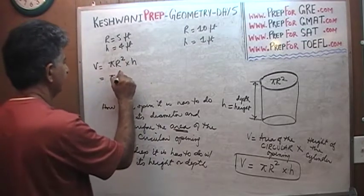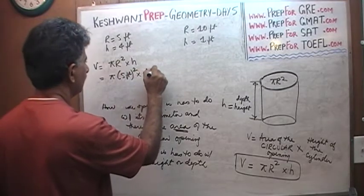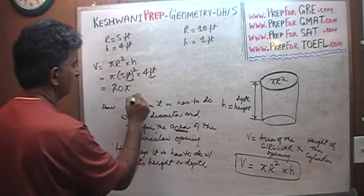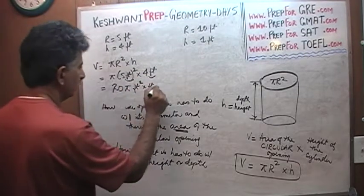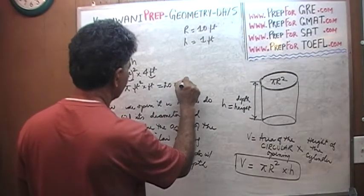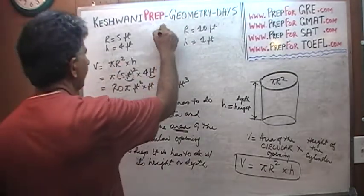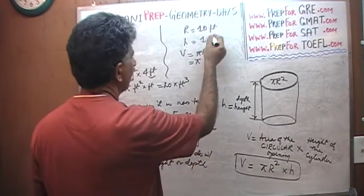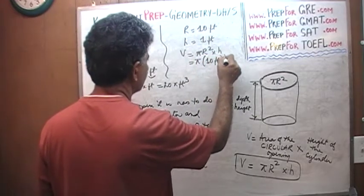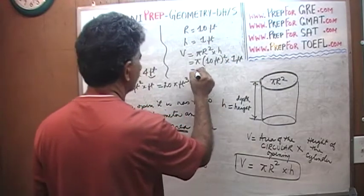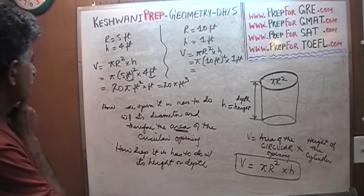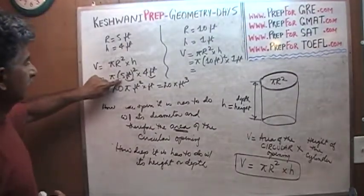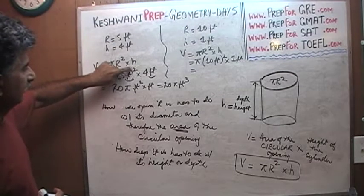Pi r squared — r is 5 feet squared — times the height, which is 4 feet. Oh wait, this is all wrong — I forgot to square the 5. Five squared is 25, times 4 is 100. So that gives us 100 pi cubic feet.